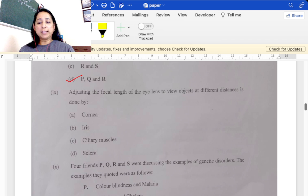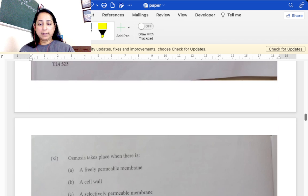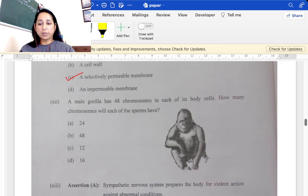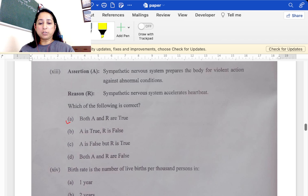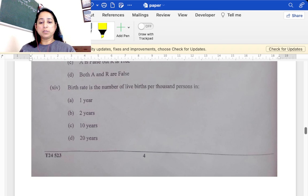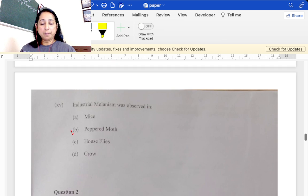Person has a heart attack question, PQR has to be done. Adjusting the focal length of eye lens to different distances is done by iris. Four friends genetic disorders, R and S, so this is option B. Osmosis requires selectively permeable membrane. Male gorilla has 48 chromosomes, sperm will have half of it, 24, option A. Reason assertion, both are true, that is option A. Birth rate is live births per thousand. Industrial melanism is observed in peppered moth.